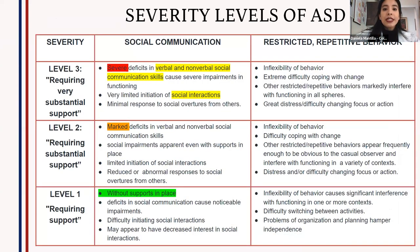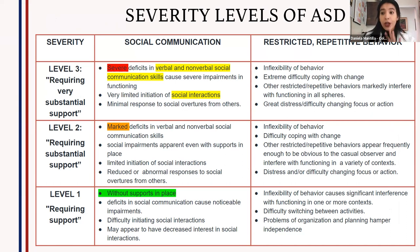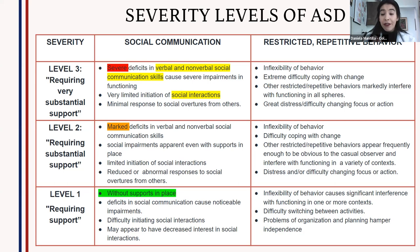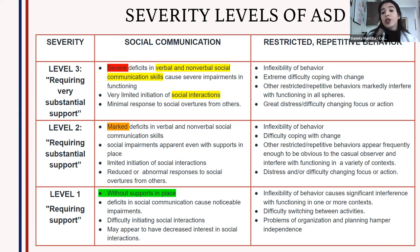The DSM-5 classifies autism into three severity levels. The three key areas we're going to clarify in autism are verbal and nonverbal communication skills and social interactions.